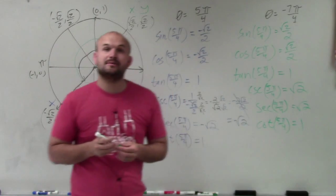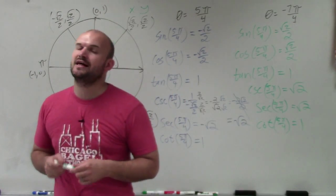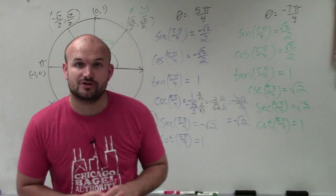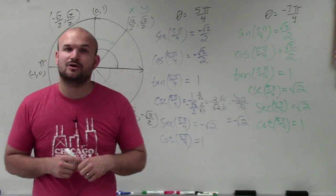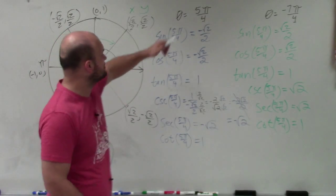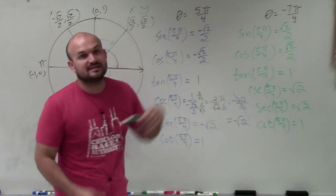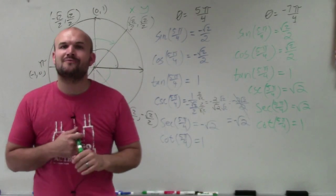And that is how you evaluate the six trigonometric functions using your unit circle for angles with a denominator of 4. Thanks.